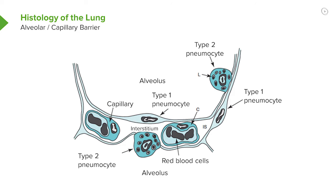This structure is important because the small gap between the alveolus and the red cell in the capillary allows diffusion of oxygen from the alveoli into the red cells much more rapidly than it would if there were a larger gap. The interstitium in the middle is very thin in the lung and should remain so for good gas exchange.